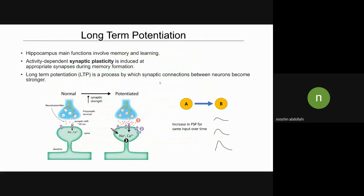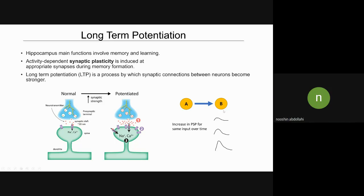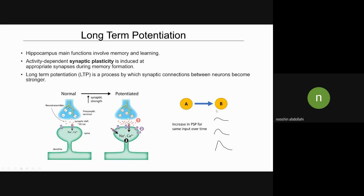As we all know, hippocampus main functions involve memory and learning. During memory and learning, synaptic plasticity occurs at synapses of a network of neurons. One type of synaptic plasticity is long-term potentiation or LTP, which is a process by which synaptic connections between neurons become stronger. Imagine that we have two neurons. Neuron A sends projection to neuron B. Initially, you might have a small postsynaptic potential. But after you pair neuron A with neuron B several times, then what you would observe is an increase in the size of the postsynaptic potential.